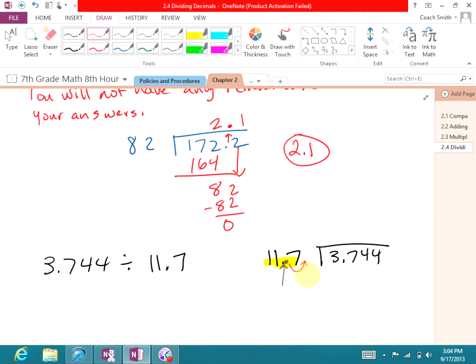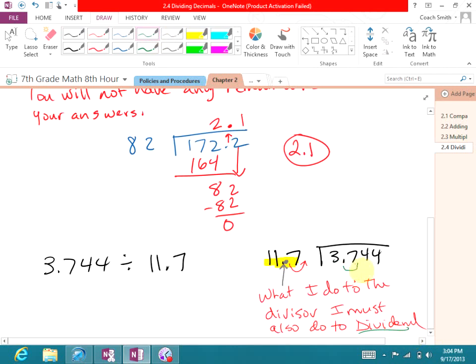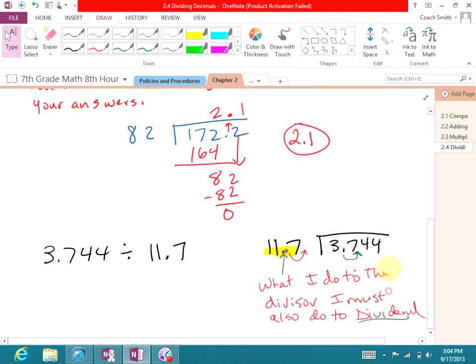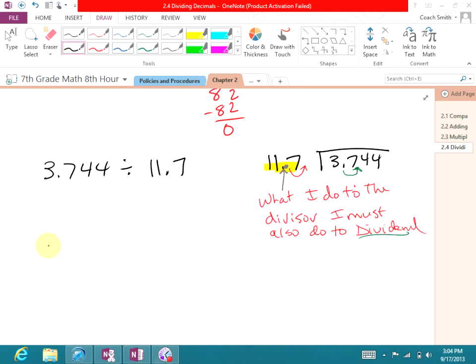Now, it's at the back of the number where every single whole number has it. Now, what I do to the divisor, I must also do to the dividend. So if I move it once there, I've got to do the same thing on the inside. I've got to move it once. So my new problem then, now that I've moved it, is 117 into 37.44. I'm going to pull up my decimal already up there because I just always like doing that that way. I don't forget it.